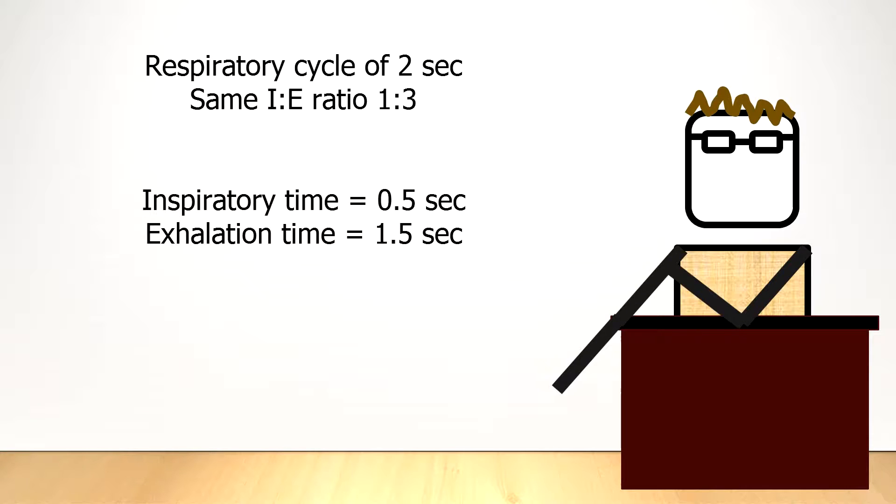If you change the total respiratory cycle from 4 seconds to 2 seconds, but maintain the same ratio, then the TI becomes 0.5, and the exhalation time is 1.5 seconds. The ratio remains the same, however.